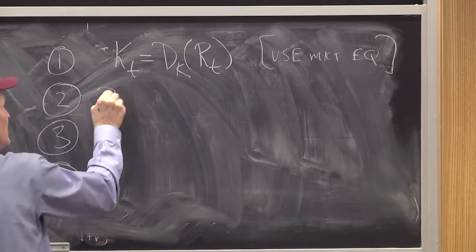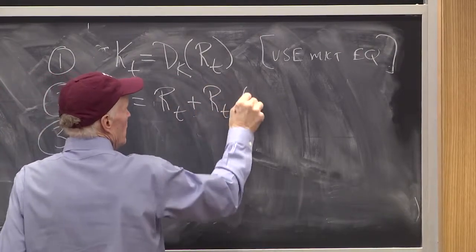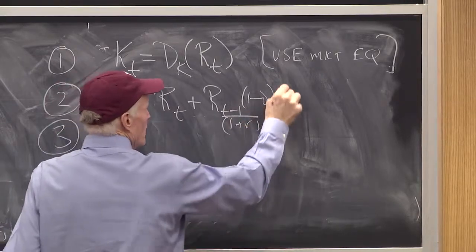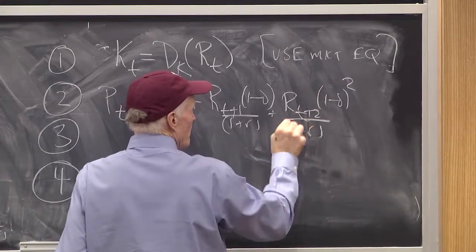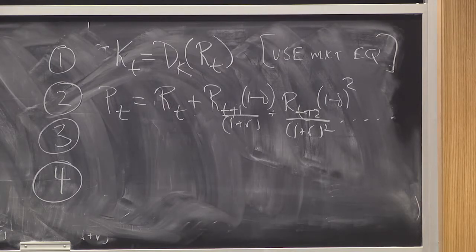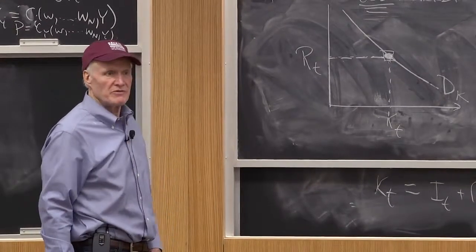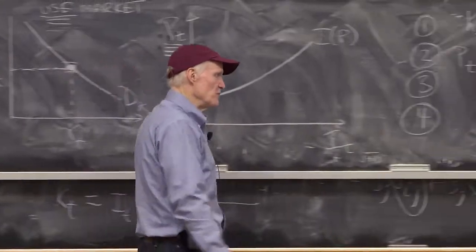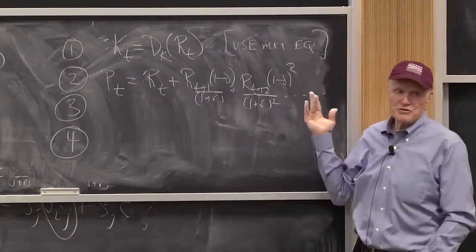Number two, today's price has to be the discounted value of future rents. You could think about that as some kind of efficient market view of the world — that the current capital price of these assets has to equal what people expect to happen in the future. In my model right now I don't have any uncertainty, so the price today is just going to equal the discounted value of all those future rents. If we want to add uncertainty, we'd need to make this some kind of expectation. But in the certainty case, today's price has to be the discounted value of future rents.